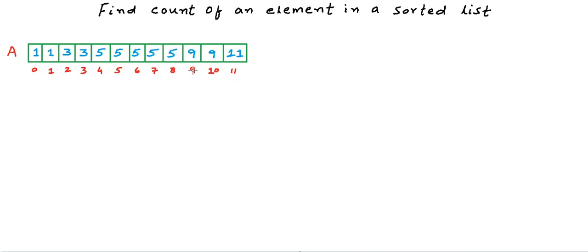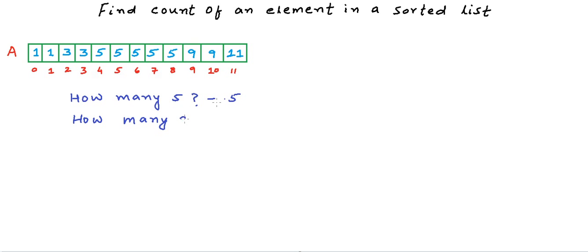Let's say we are given a list in the form of an array. Here we have an array of size 12 and the elements are in increasing order. How many times does number five occur in this array? Five occurs five times. And how many times does number two occur? Two does not occur in the array.